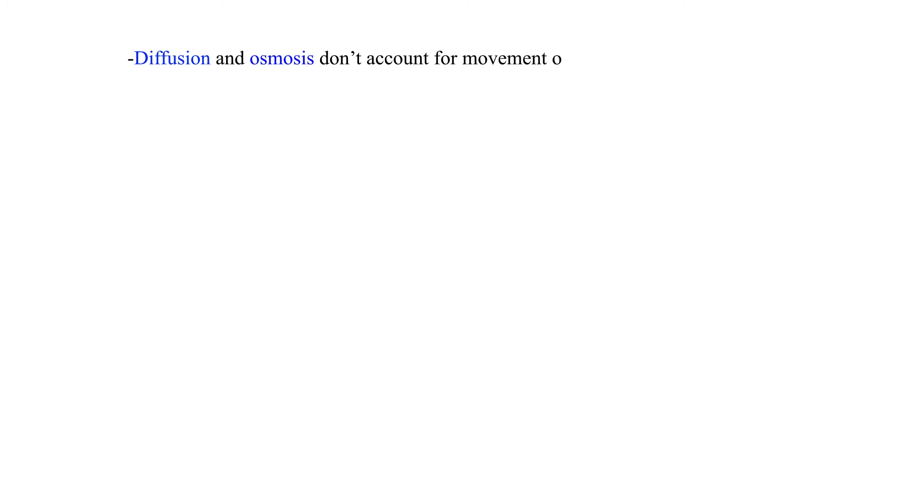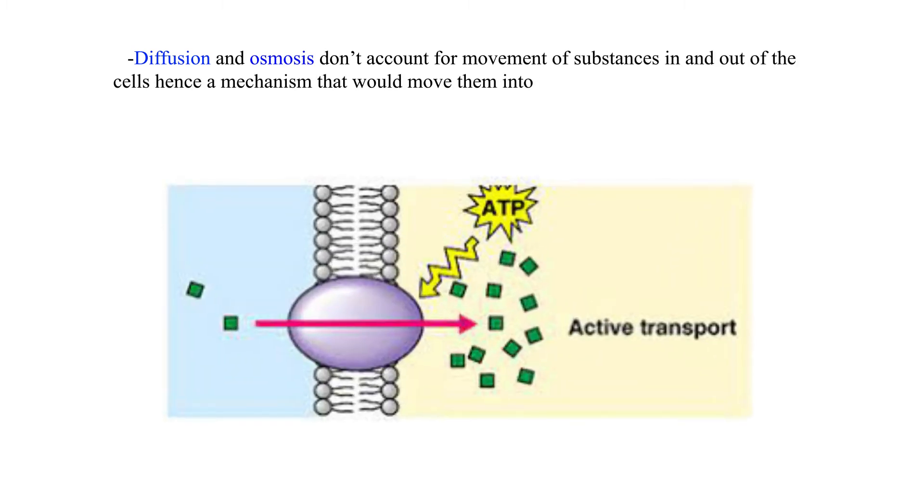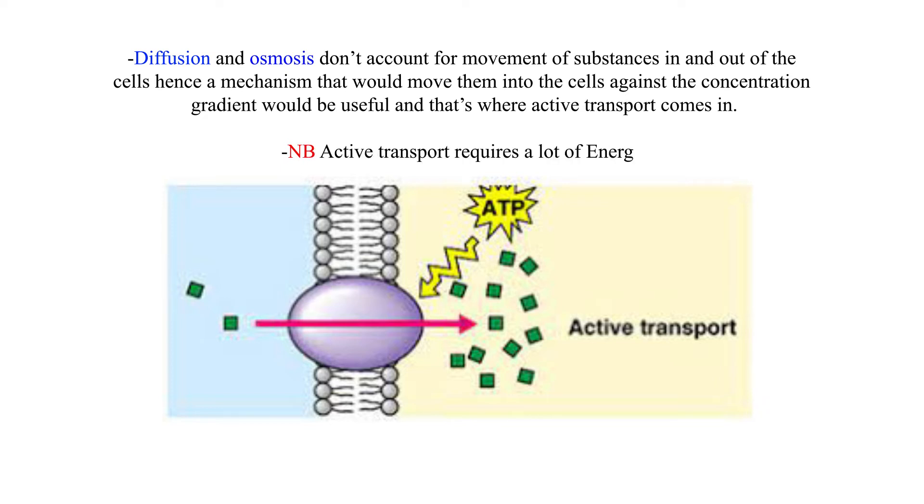Diffusion and osmosis don't account for movement of substances in and out of the cells, hence a mechanism that would move them into the cells against the concentration gradient would be useful, and that's where active transport comes in. N.B. Active transport requires a lot of energy.